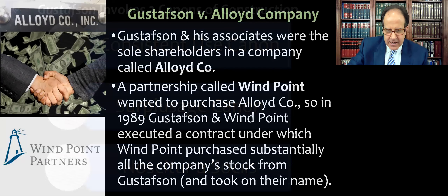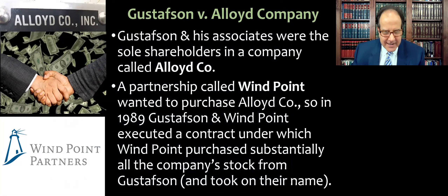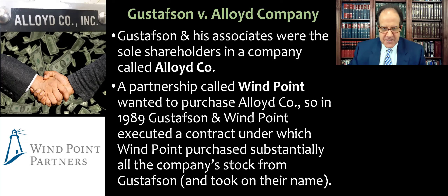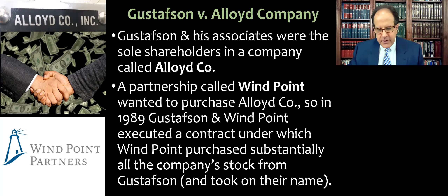Now about the facts. This is about selling a company. You have some investors called WinPoint Partners who want to buy a company called Alloid, which is owned by Gustafson and a few of his friends — they're the sole shareholders. This is not a publicly traded company. WinPoint Partners wanted to purchase it in the late 1980s, and they made a contract to basically buy all of the stock shares from Gustafson and so forth.